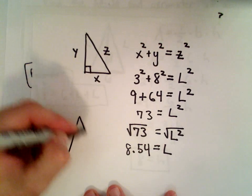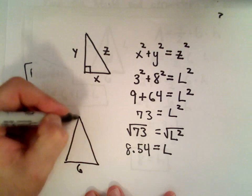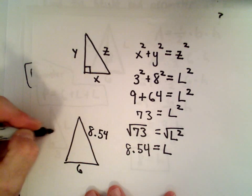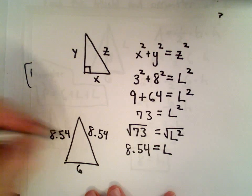So now we can go back to our triangle. The base was 6. Now we know that each of these side lengths, that's going to be roughly 8.54 and 8.54.